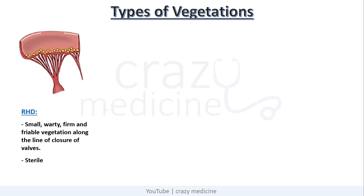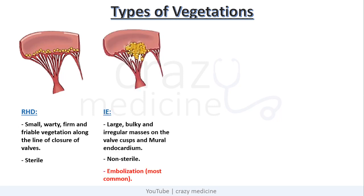Next is infective endocarditis. Here vegetations are large, bulky, and irregular, present on the valve cusps and mural endocardium. Vegetations in infective endocarditis are non-sterile, and they are also the most common vegetations to embolize.